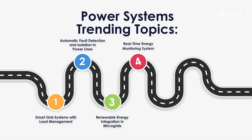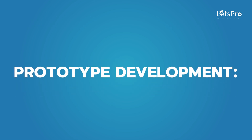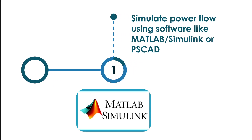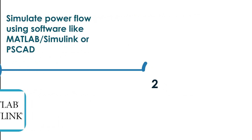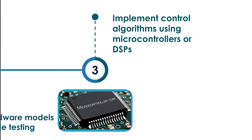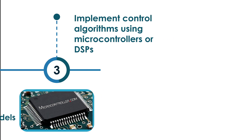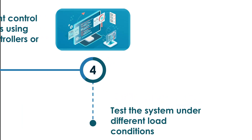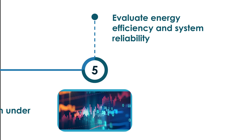More trending topics: Real-Time Energy Monitoring System, Dynamic Voltage Restorer for Power Quality Improvement. Prototype Development: Simulate power flow using software like MATLAB, Simulink, or PSCAD. Develop hardware models for small-scale testing. Implement control algorithms using microcontrollers or DSPs. Test the system under different load conditions. Evaluate energy efficiency and system reliability.